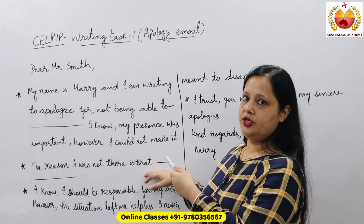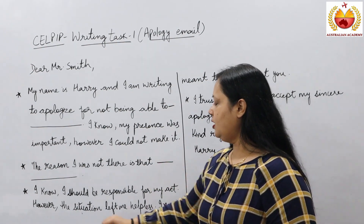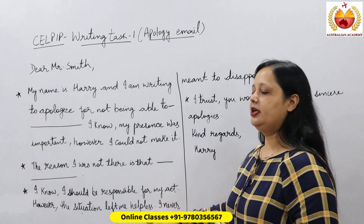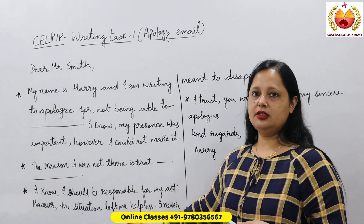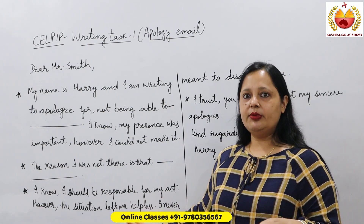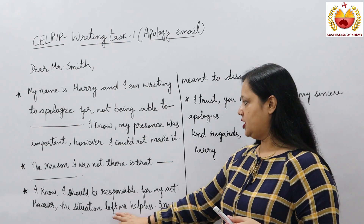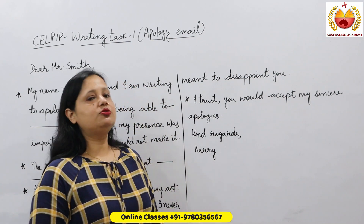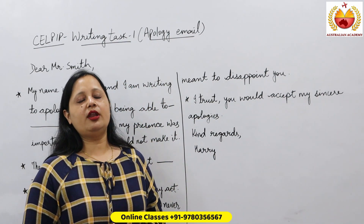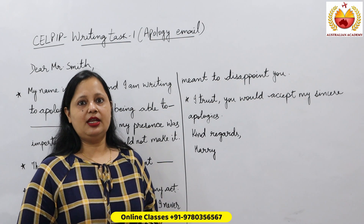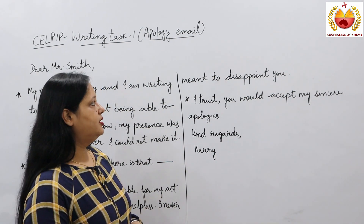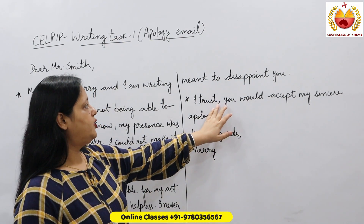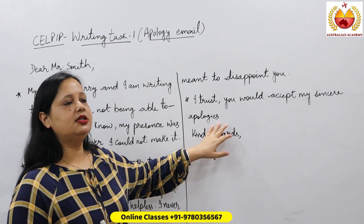You got so much indulged and tensed because of that emergency that you were not able to inform your manager. Then write: 'I know I should be responsible for my actions; however, the situation left me helpless.' When you write like this, the other person has a little sympathy for you and you'll be forgiven. Also add: 'I never meant to disappoint you' — meaning whatever happened was unintentional.